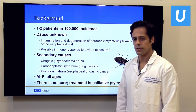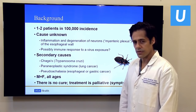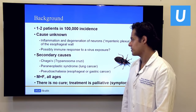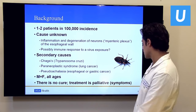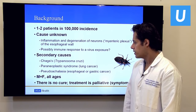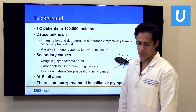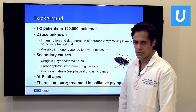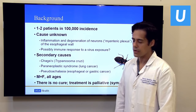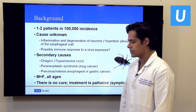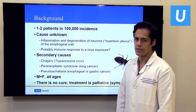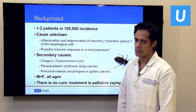There are secondary causes of achalasia that are much less common but important. In parts of the world such as South America, a secondary cause is Chagas disease, caused by the parasite trypanosoma cruzi transmitted by the kissing bug. Another secondary cause is paraneoplastic syndrome, where a tumor such as lung cancer can secrete antibodies and mimic achalasia. Pseudo-achalasia — a tumor of the esophagus or stomach — can also produce similar findings. A lot of the testing is aimed at excluding these other diagnoses.